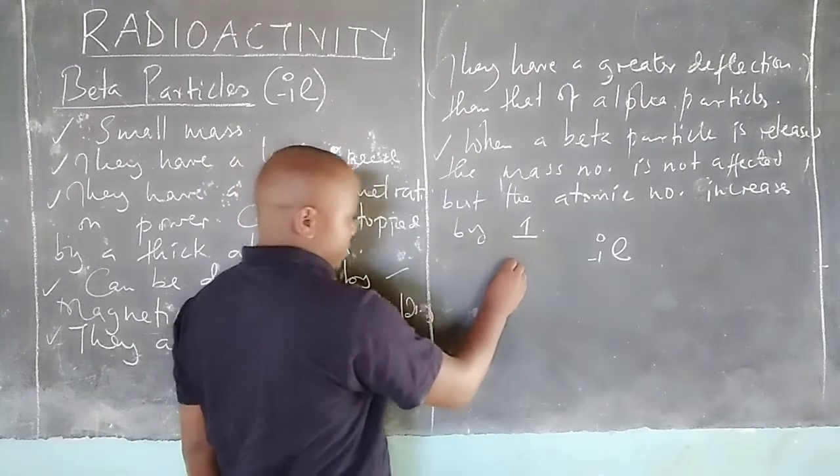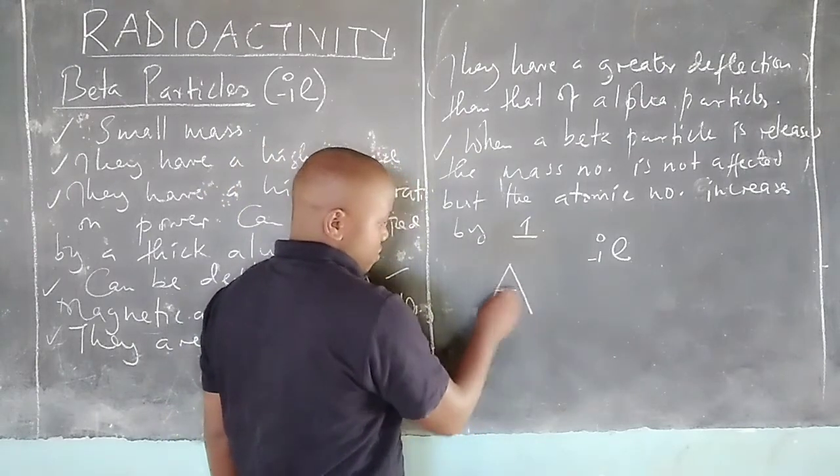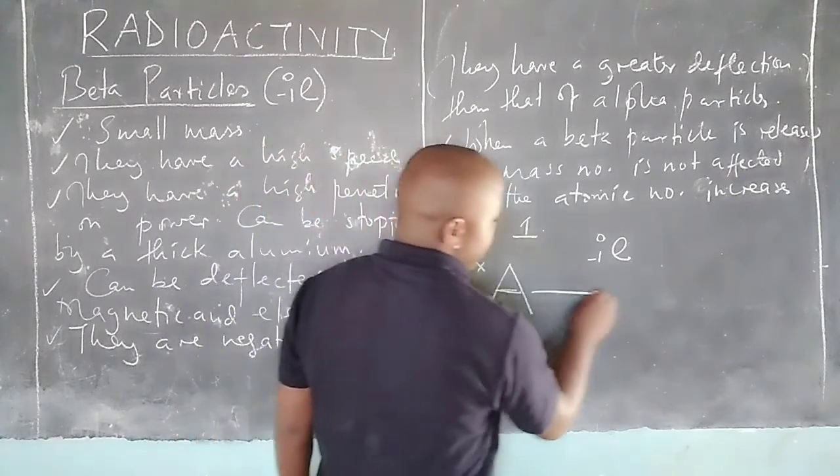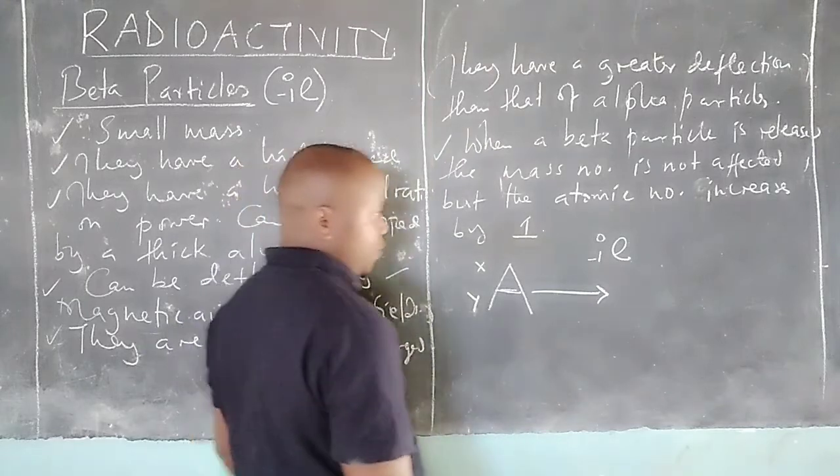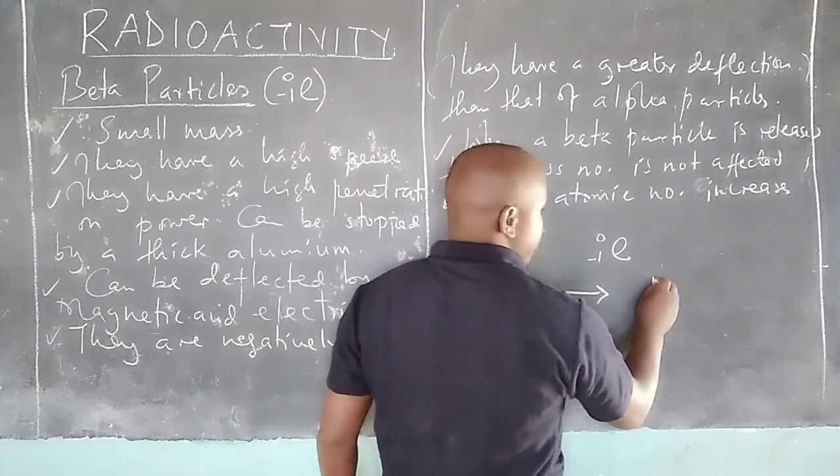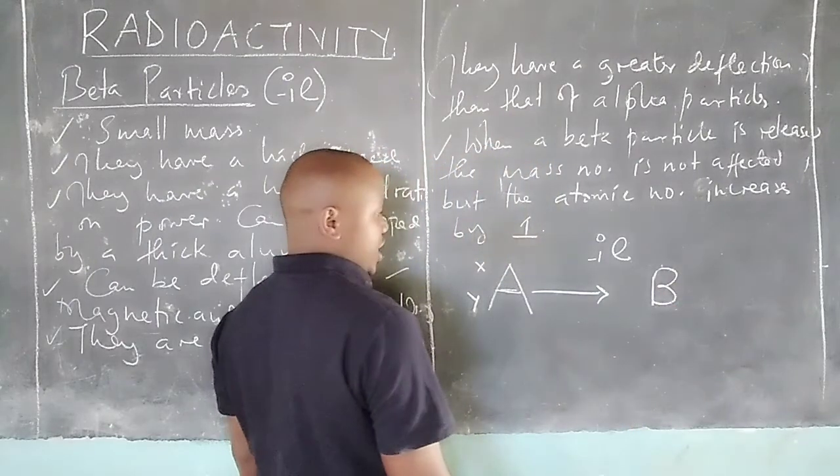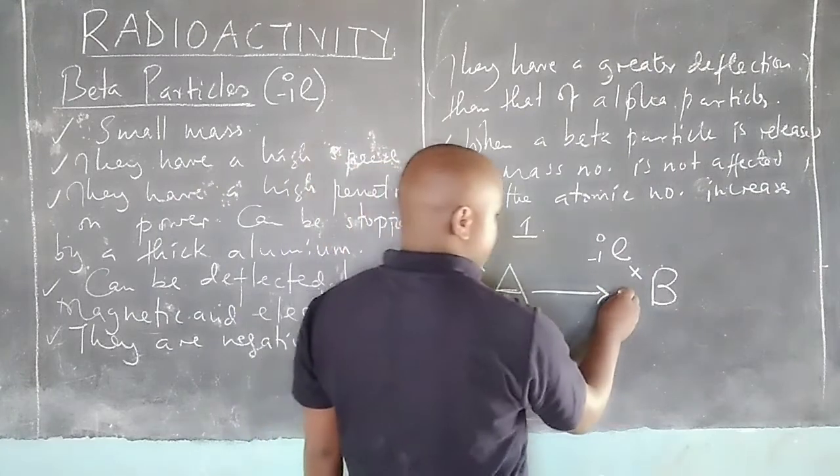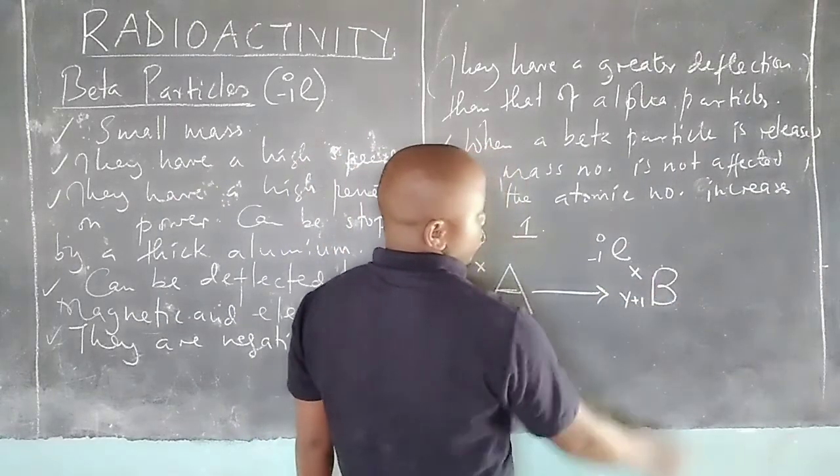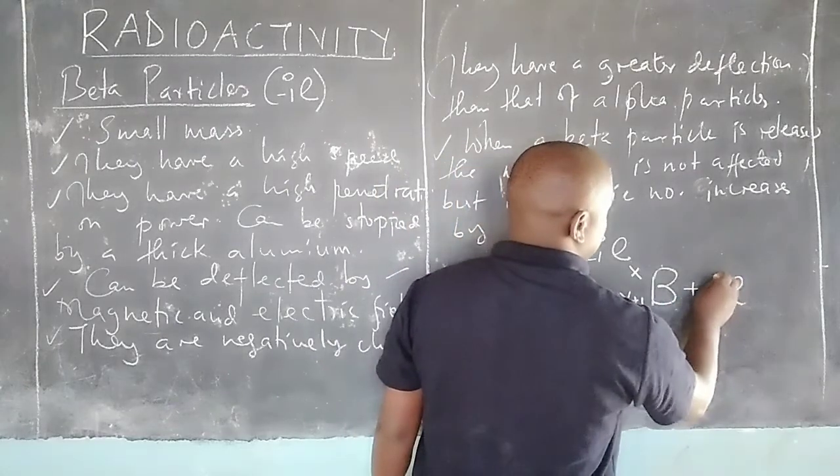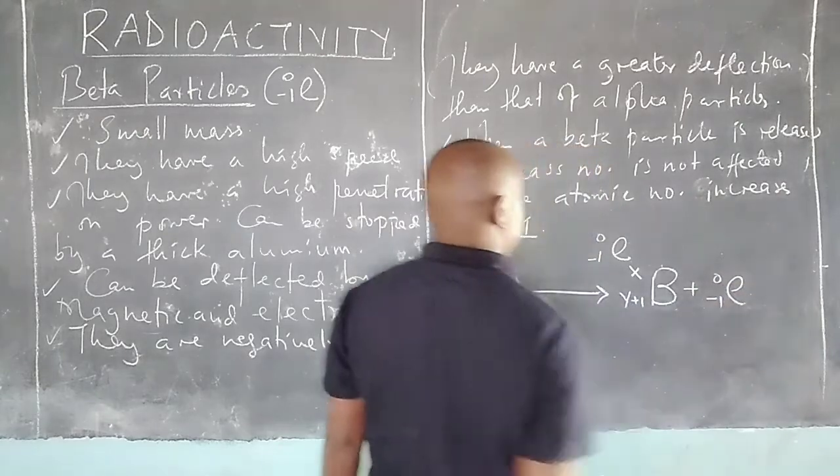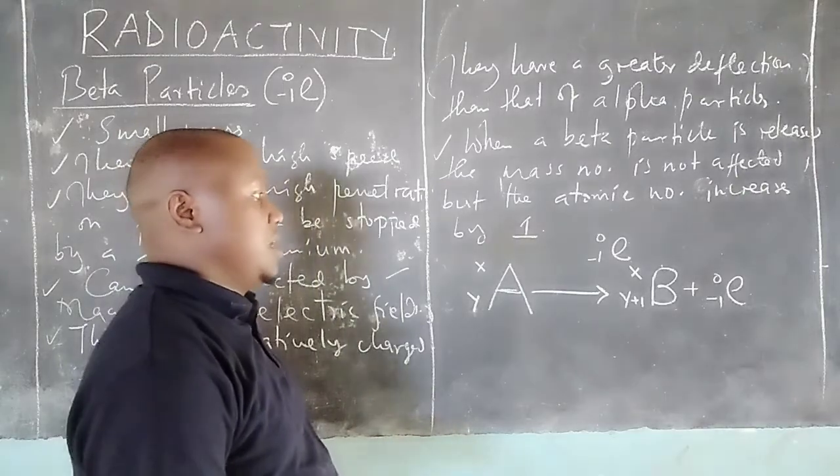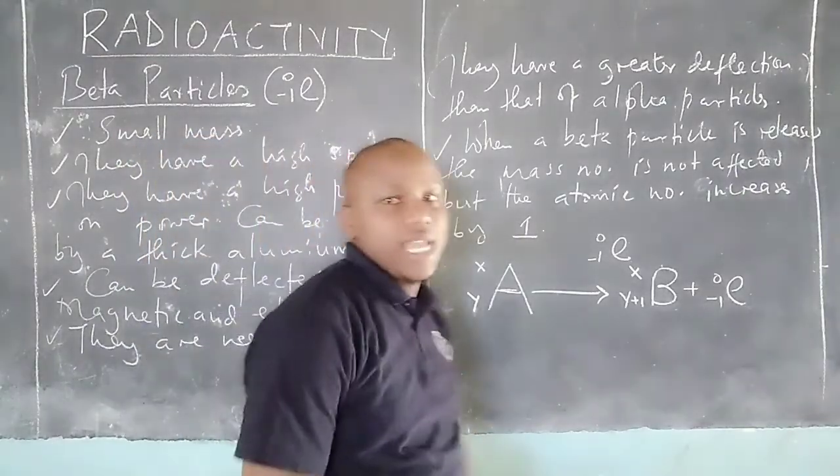If we got a parent nuclide here with mass number X and atomic number Y, then it loses a beta particle which is an electron, then it will become a new nuclide which is called a daughter nuclide. And the mass number will remain the same with the atomic number increasing by one. Then the lost beta particle will be here. So that is how beta particles are released from a disintegrating nucleus of an atom.